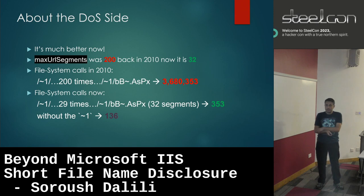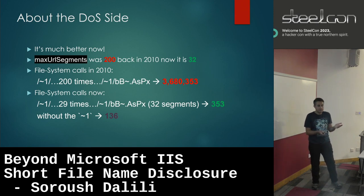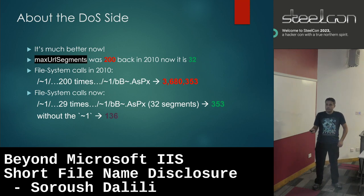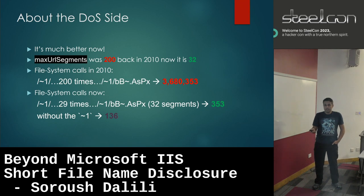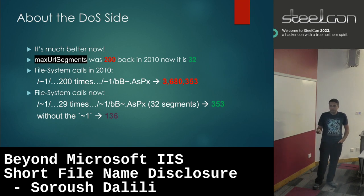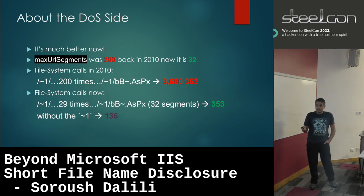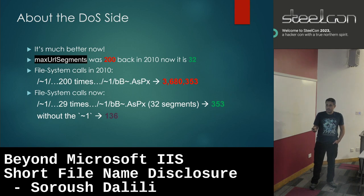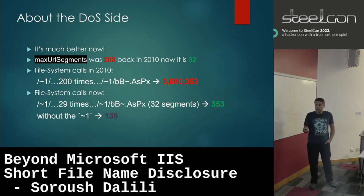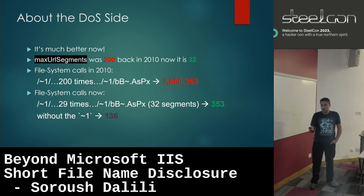The DoS existed because of a parameter called max URL segments — anything between slashes. Originally back in 2010, this was set to 200. Now it's limited to 32. Back in 2010, if I sent a request with 200 segments, it would generate more than 3 million calls to the file system per request. Sending 100 requests brought CPU usage to 100% and the file system was completely busy. Microsoft didn't address it immediately, but they later changed it themselves.